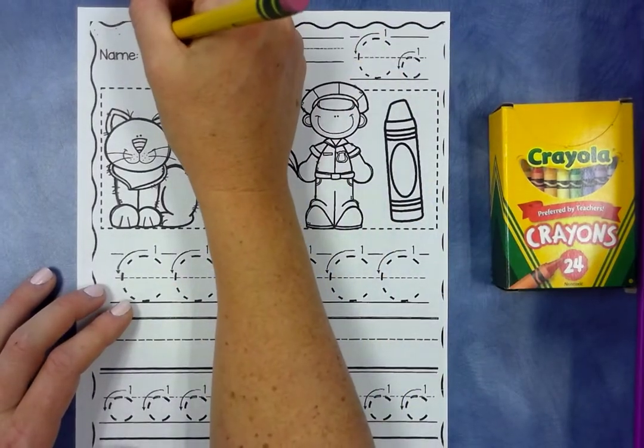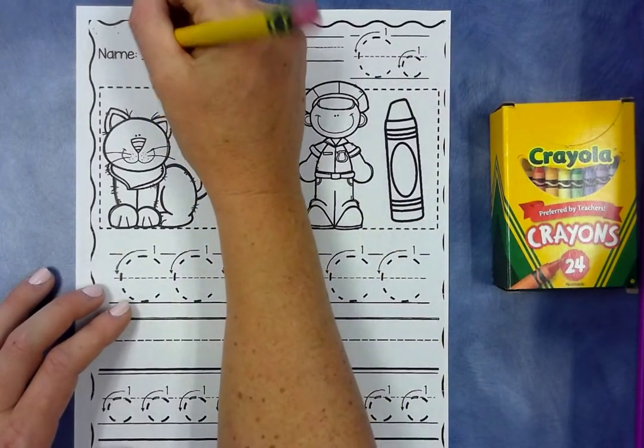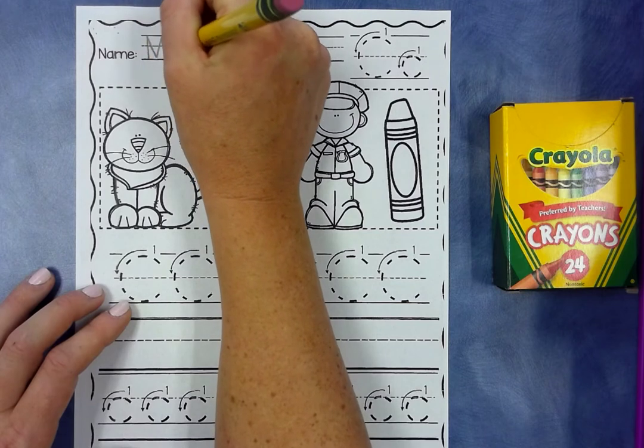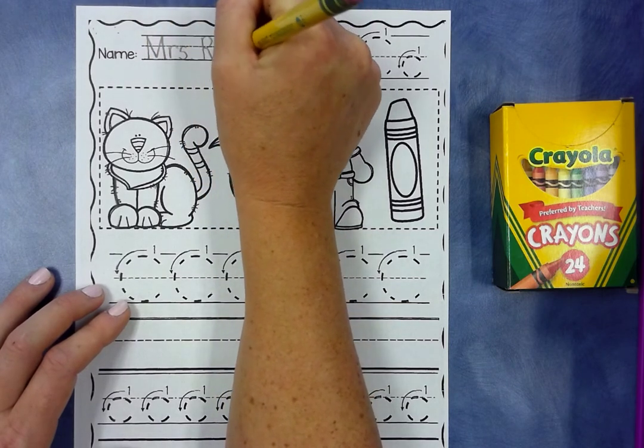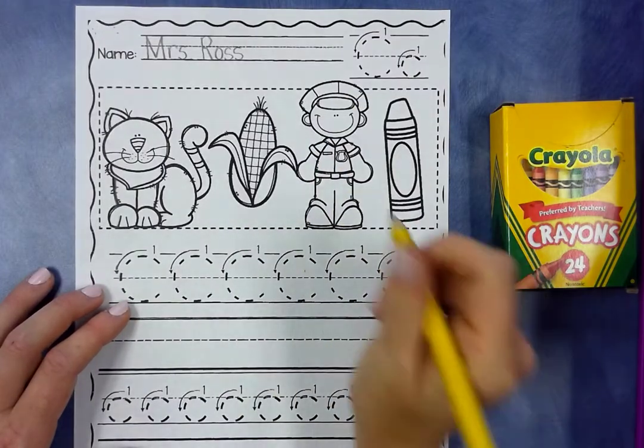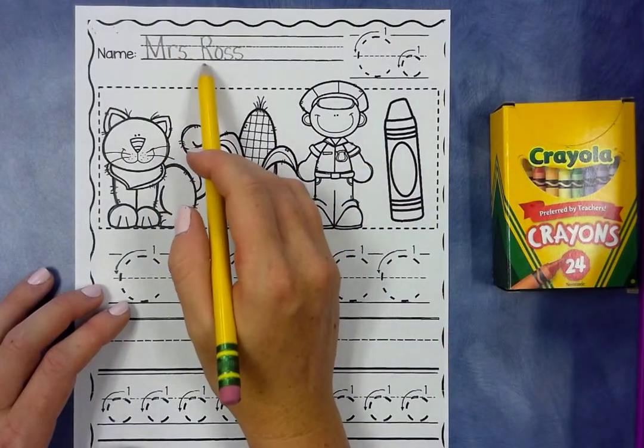So at the very top, you are going to be writing your name. Don't write my name, because your name's not Mrs. Ross. If it is, that'd be kind of cool. But no, you're going to write your name up at the top.